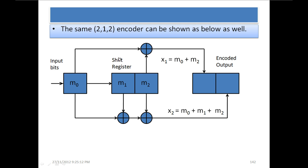Here is another diagram of the 2,1,2 encoder. Input bits are stored in M0 (the first register), and M1 and M2 are two shift registers. Output X1 is the combination of the current input bit and the value in register M2. When an input bit arrives at M0, it shifts to M1, then to M2, and is then discarded. So each input bit affects at least two encoding outputs of the convolutional encoder before being discarded.